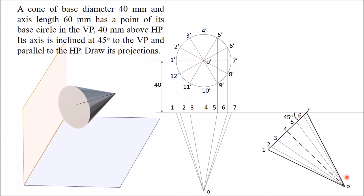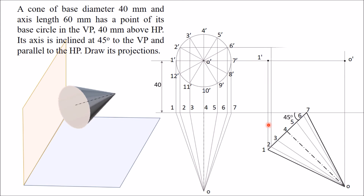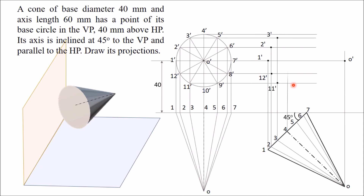To get the front view, draw vertical projectors from all the points in the top view. From point 1, draw a vertical projector; from O in the front view draw a horizontal projector, and their intersection gives O'. From point 1 similarly obtain point 1'. For points 2 and 12, which coincide in the top view, draw a horizontal projector to get 2' and 12'. In this way obtain 3' and 11', 4' and 10', and all other points in the front view.